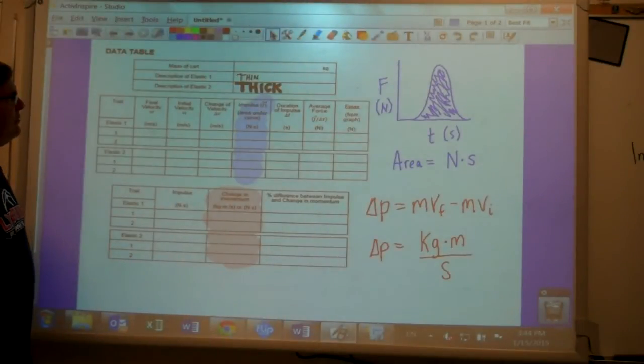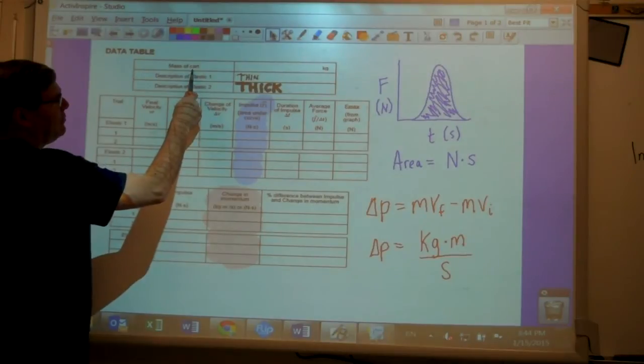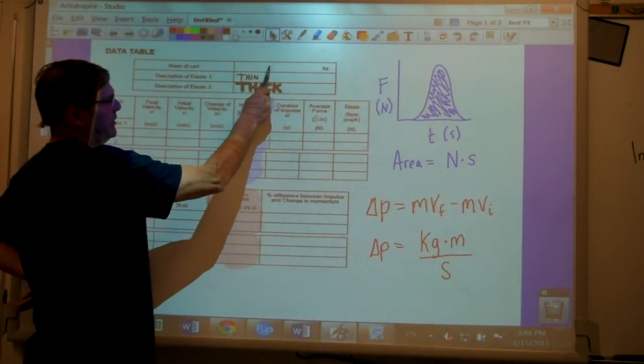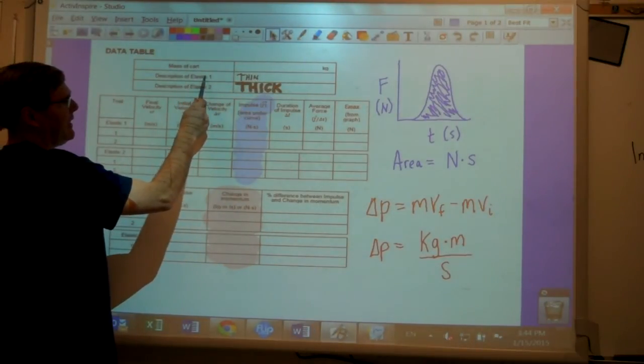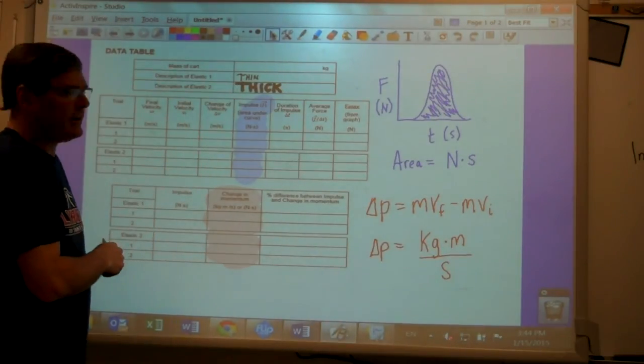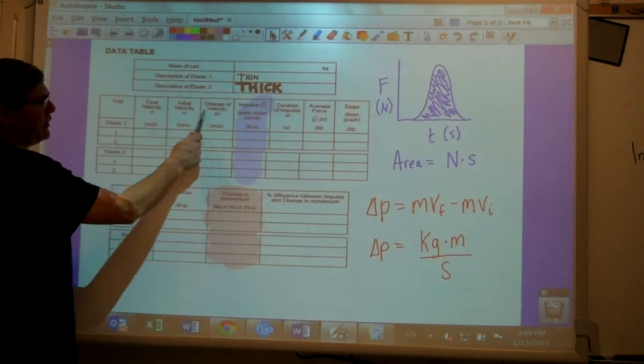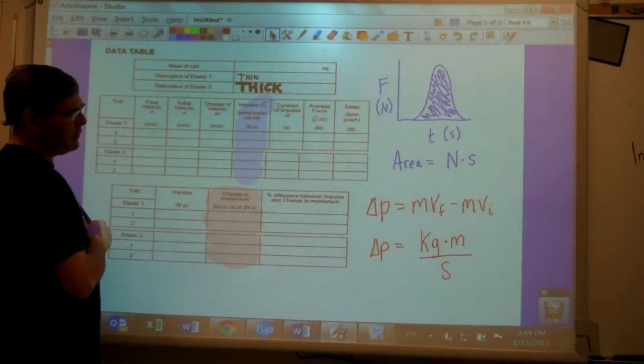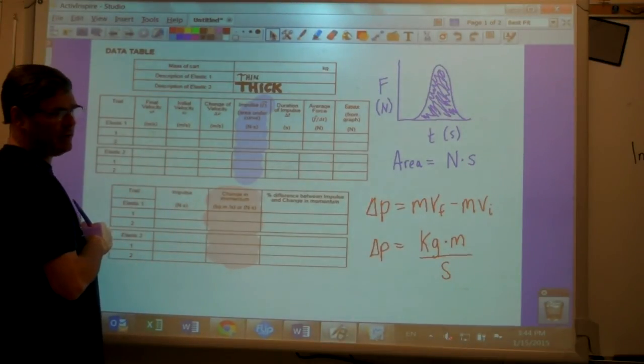When you fill in your data table, the first table, mass of cart goes here. The description of the elastic band one and description of elastic band two. That's just thin or thick.